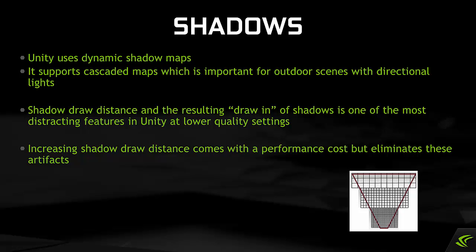Shadows. Unity uses dynamic shadow maps and supports cascaded maps, which is important for outdoor scenes with directional lights. Shadow draw distance and the resulting draw-in or pop of shadows is one of the most distracting features in Unity at lower quality settings. Increasing shadow draw distance eliminates these artifacts, though it comes with a performance cost.